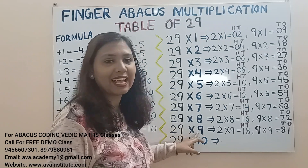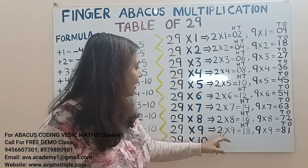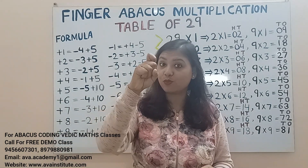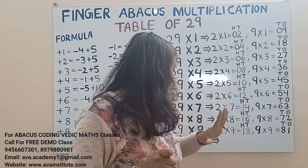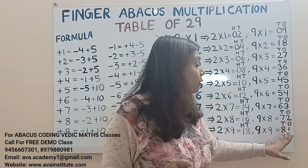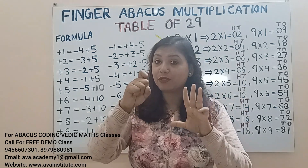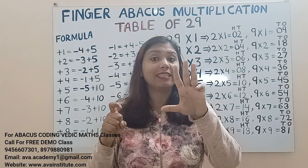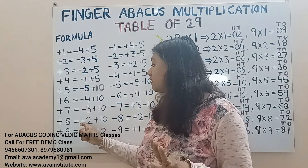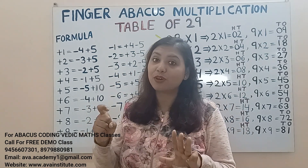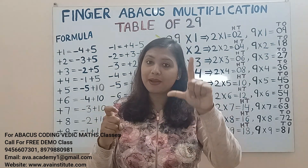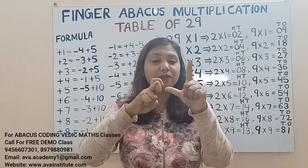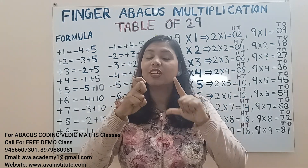Next, 29 nines. 2 nines are 18 — represent 1 in hundreds and 8 in tens. 9 nines are 81 — add 80 in tens and 1 in ones. Plus 8 formula is minus 2 plus 10, so plus 80 is minus 20 plus 100. The answer: 100, 200... 50, 60... 1 — 261 is the answer.